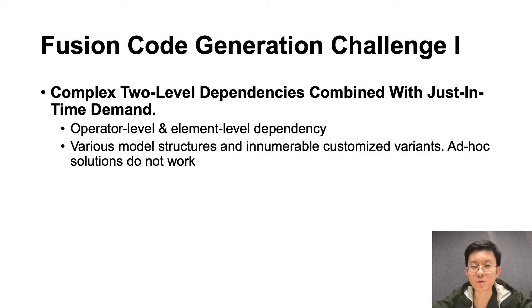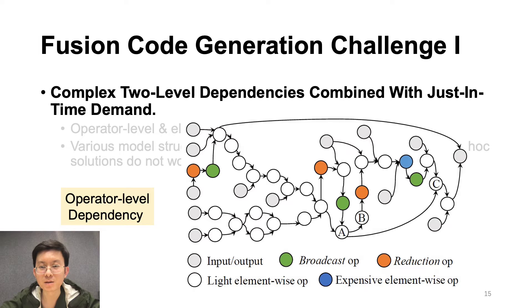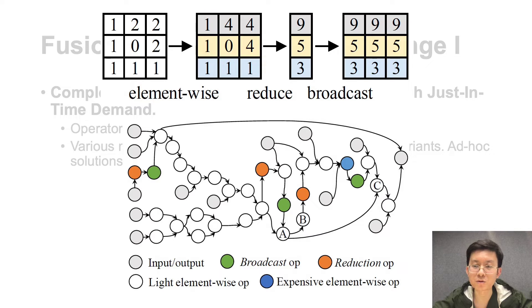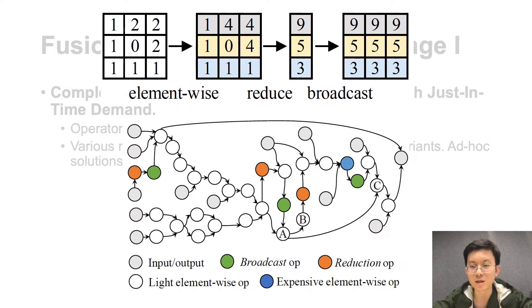Fusing code generation for machine learning models is quite tricky due to two main challenges. The first is the complex dependencies at both operator level and element level, especially combined with just-in-time demand. An example of operator-level dependency comes from a transformer model in industry — this is a subgraph of memory-intensive ops where some ops are consumed by many ops, and some ops are producers of many ops. At element level, there is many-to-one dependency for reduce, and one-to-many dependency for broadcast. Ad-hoc solutions like handwritten kernels do not work; a compiler is the right way, but multi-level dependencies and just-in-time demand make it very difficult.